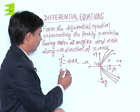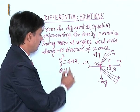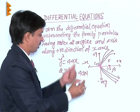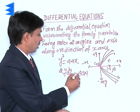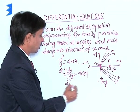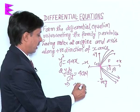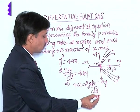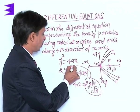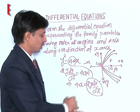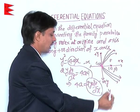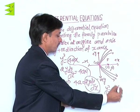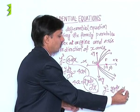On differentiating, y²'s derivative becomes 2y dy/dx equals to 4a times 1, because derivative of x is 1. What is the value of 4a? 4a is 2y dy/dx. If this value of 4a is substituted in the original equation, we get y² = 4ax, which means y² = 2y dy/dx times x.